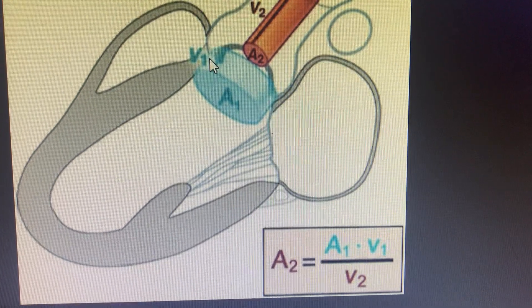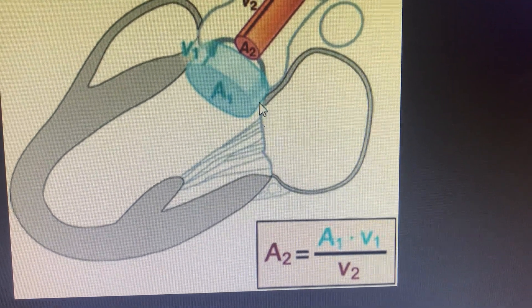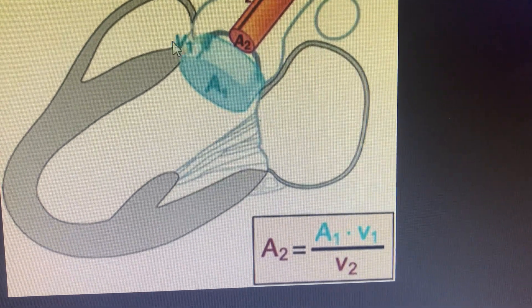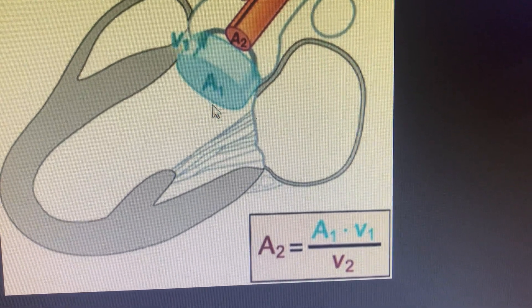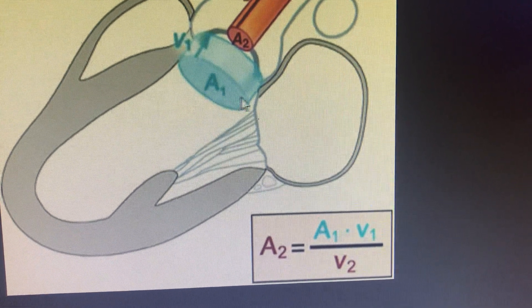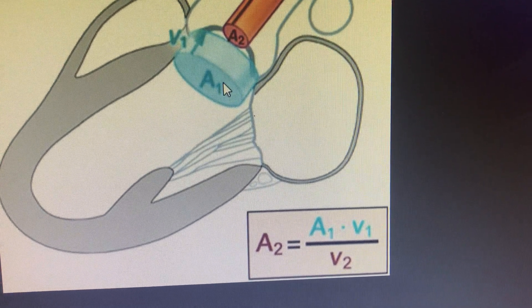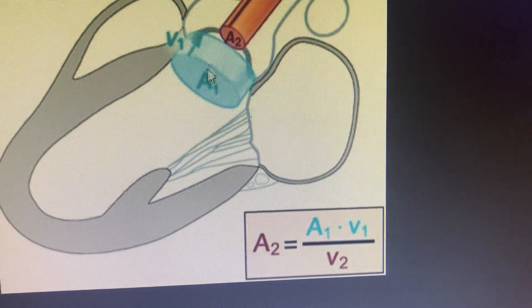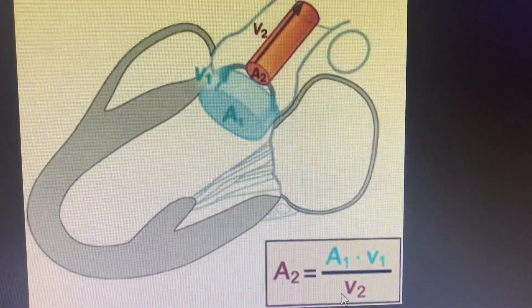That is from the basal septum to the anterior mitral leaflet in mid-systole. That will give you the area of the LVOT. The difficulty is that it will be considered circular because you are calculating this area by just the diameter, so it will become a circular thing, but it actually is elliptical. That's where the difference is.